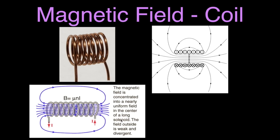Sometimes a coil is referred to as a solenoid. Outside, there's a weak magnetic field that's kind of diverging — we're usually more concerned about the field inside that coil of wire. We can take a cross-section and look at it. These are the coils on the wire, the turnings on that coil of wire.